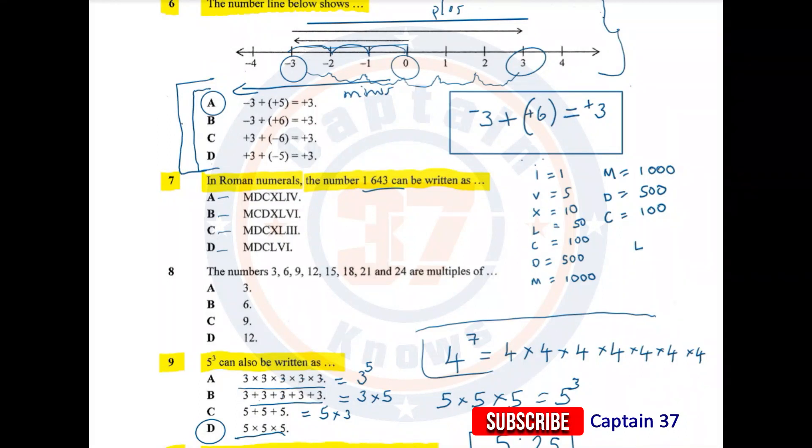But what we want is 43. We can get 40 by taking away X, which is 10, from the 50. And how is that written? Whenever you write a smaller letter in front of a bigger letter, what is happening is you are subtracting. For example, if I write IX, this stands for 4 because I is smaller than X.